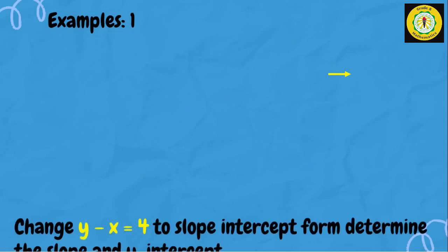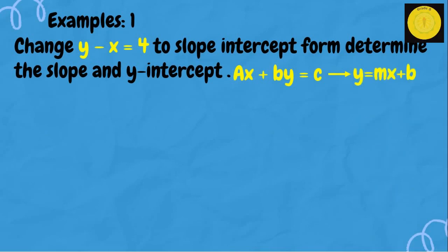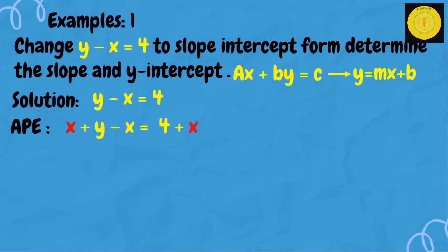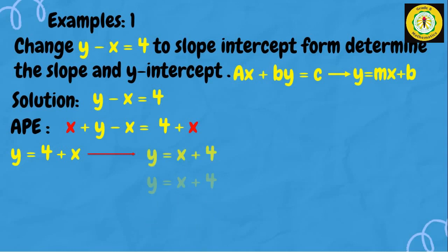Change y minus x equals 4 to slope-intercept form and determine the slope and y-intercept. From standard form ax plus by equals c, we need to change it into y equals mx plus b form. Our given is y minus x equals 4, and our target is to isolate y. Using the addition property of equality, we add x to both sides of the equation. So we get y equals 4 plus x, or y equals x plus 4.